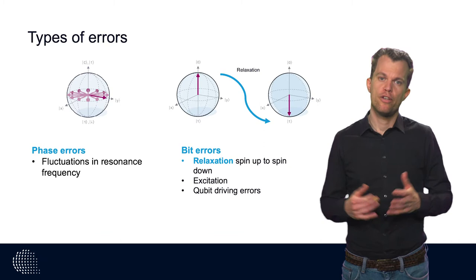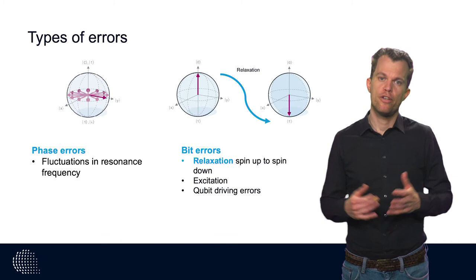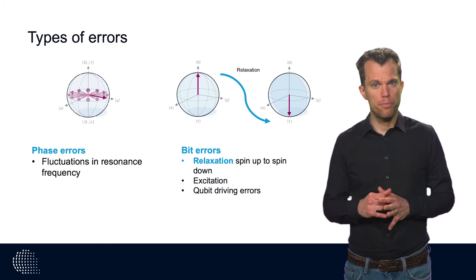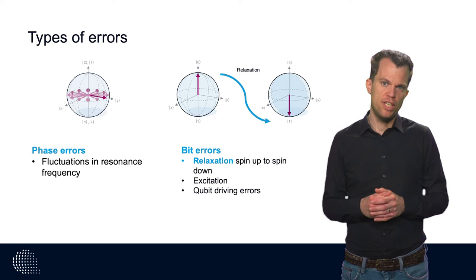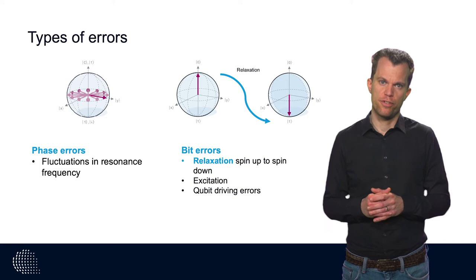Indeed, if we were to apply a basis transformation using the Pauli matrices, a phase flip error can be transformed into a bit flip error. However, if we inspect the physical system, we see that phase and bit flip errors can be sensitive to different noise sources.